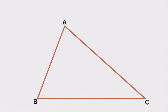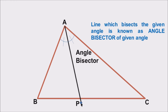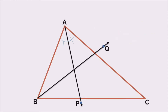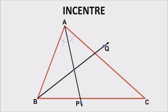Draw a new triangle and label it as ABC. Let's draw the angle bisector of angle A — AP bisects angle A. The line which bisects a given angle is known as the angle bisector of that angle. Let's plot one more angle bisector: BQ bisects angle B. These two bisectors of angles A and B intersect at a point, which is known as the incenter of a triangle.